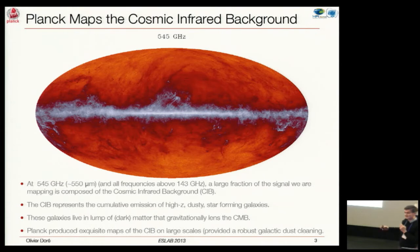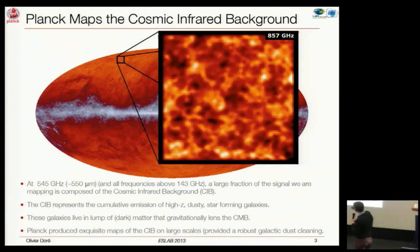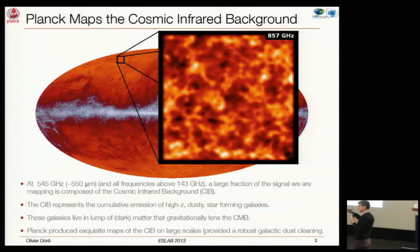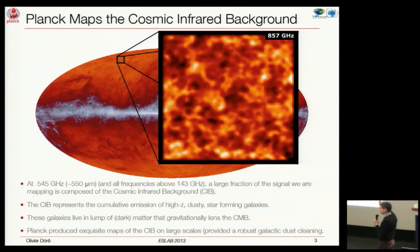Another thing Planck does very well is mapping dust. You can see it in this beautiful map at around 545 GHz where you see really diffuse and elongated galactic dust. But if you zoom in a little more, you see that extragalactic dust looks very much like galactic dust—it's just a redshifted featureless spectra, unfortunately. We also map really well the infrared background. The infrared background is basically the cumulative high-z emission from dusty galaxies.